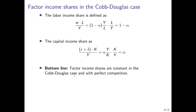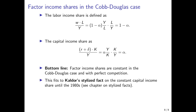The bottom line is that factor income shares are constant in the case of a Cobb-Douglas production function with perfect competition. This actually fits the stylized facts of economic growth — Kaldor's stylized facts specifically. Nicholas Kaldor stated that over most of the 19th and first half of the 20th century the capital income share stayed constant, and this is what we see in the data, at least until the 1980s.